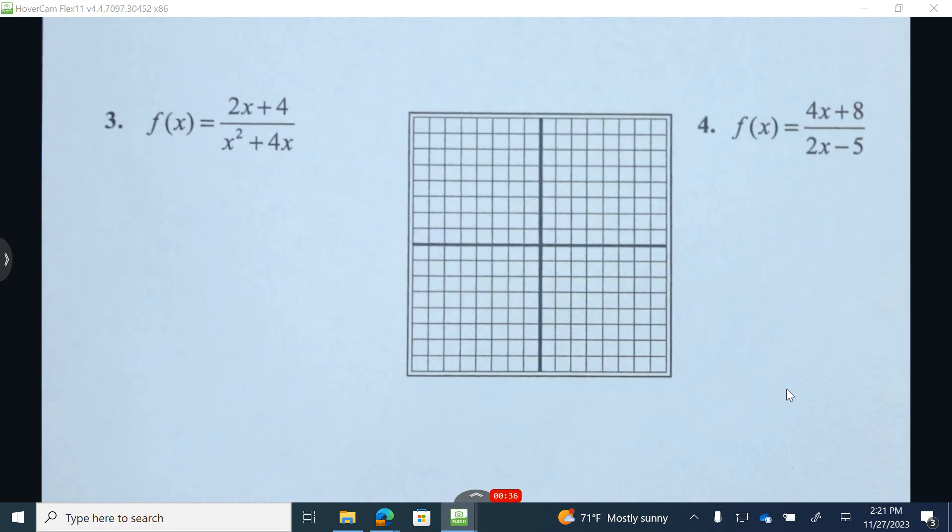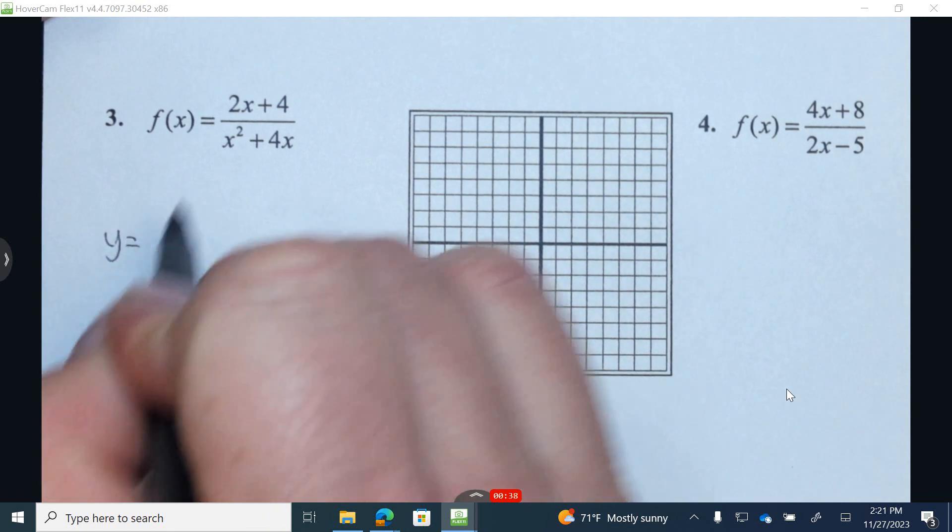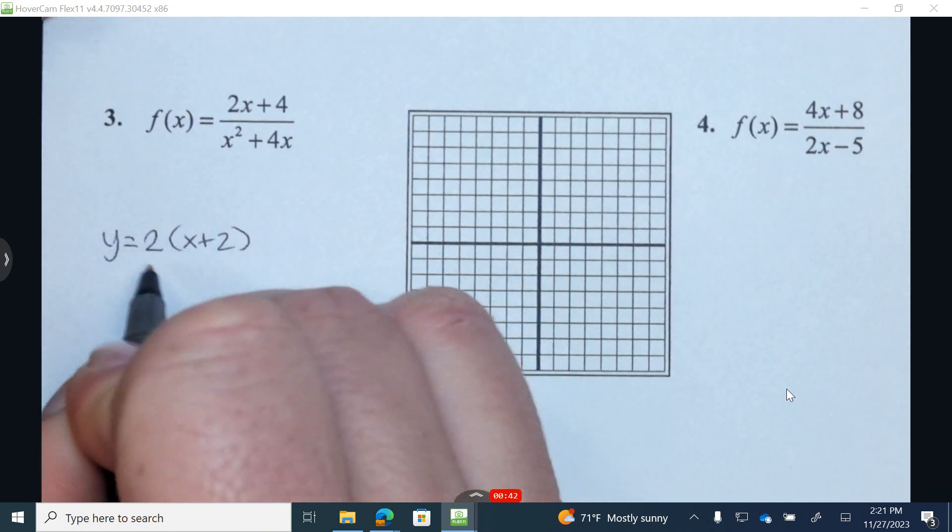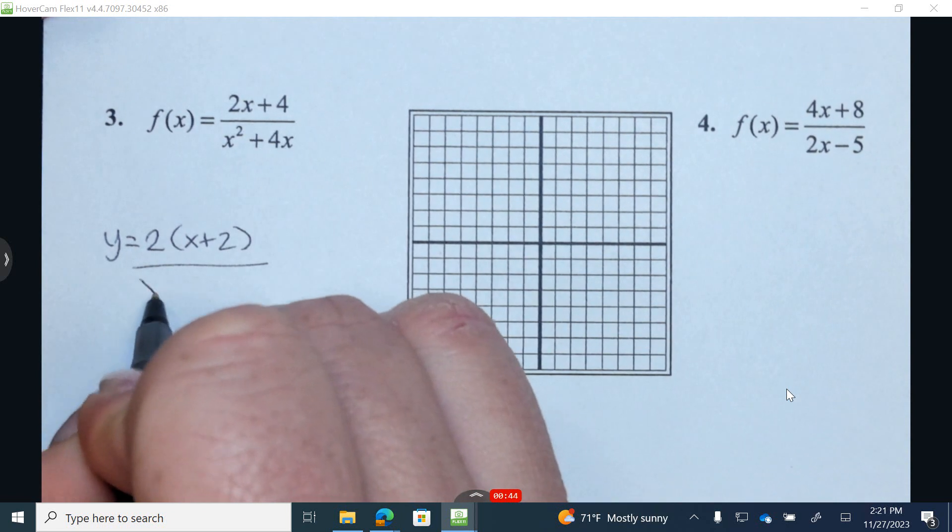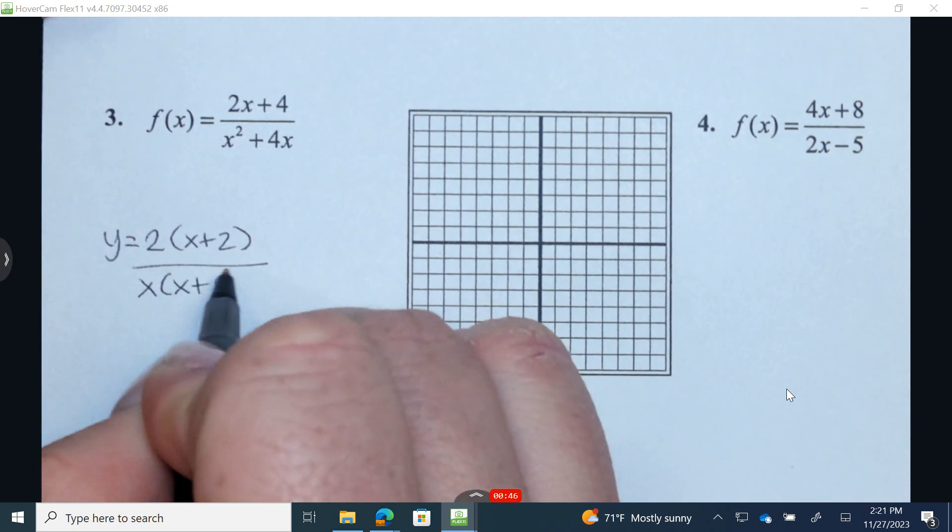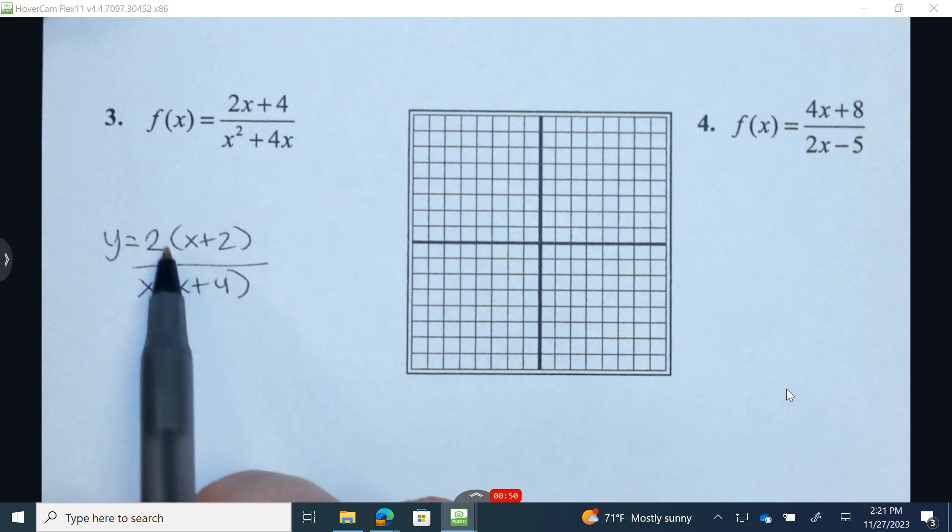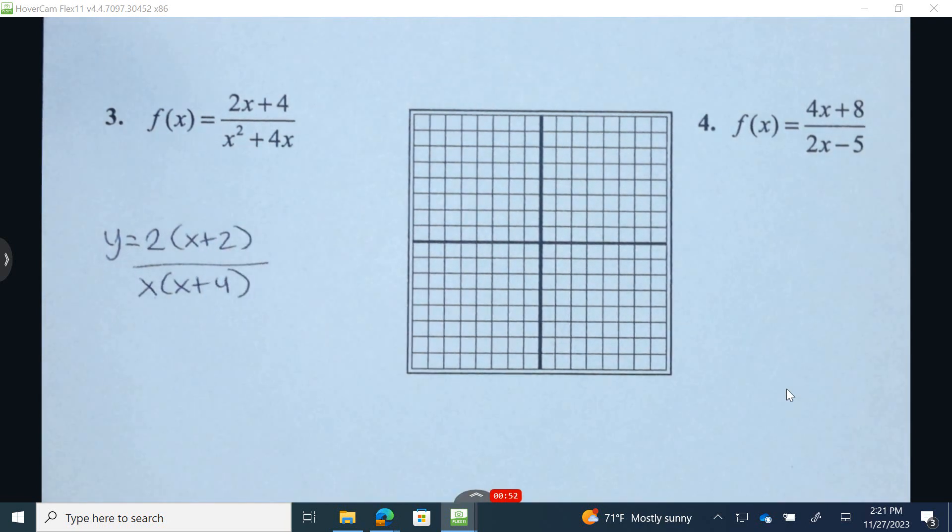Well, the first thing I'm going to do is I'm going to rewrite this. y equals, I'm going to factor out a 2, and I'm going to get x plus 2. And then at the bottom, I'm going to factor out an x, and I'm going to get x plus 4. Now let's make sure this works. There's x squared plus 4x and 2x plus 4. Okay, that works.